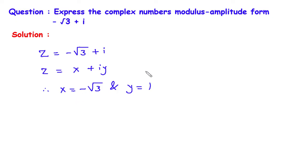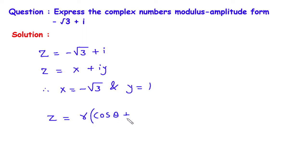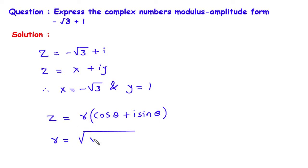Now we have to find the modulus-amplitude form. The modulus-amplitude form is Z is equal to R in bracket cos theta plus i sin theta. Now we have to find the value of R. So R is equal to under root of X squared plus Y squared.